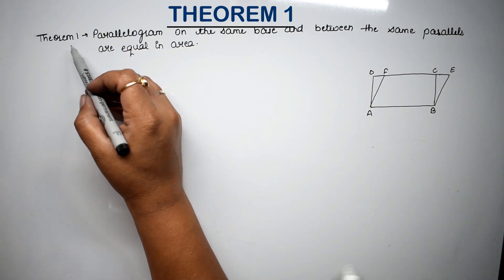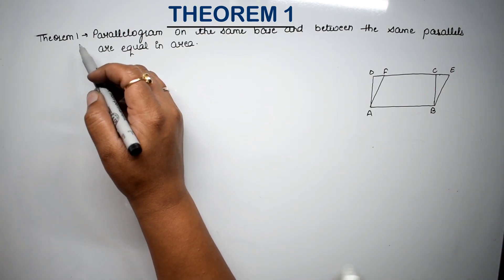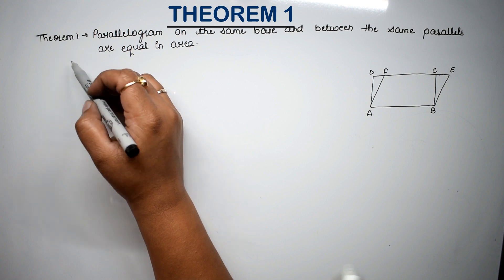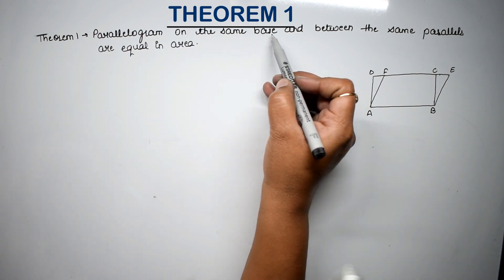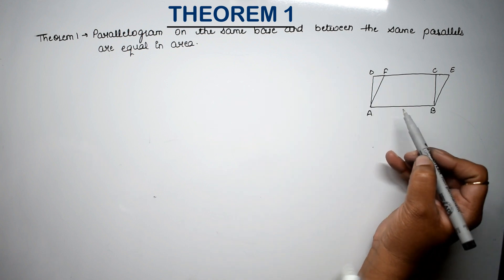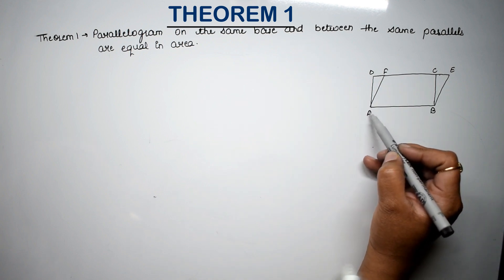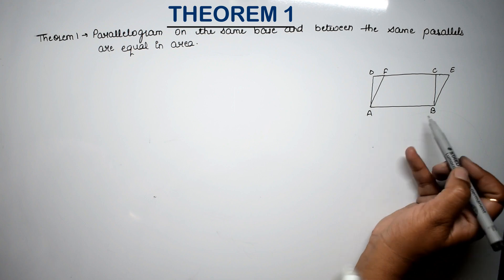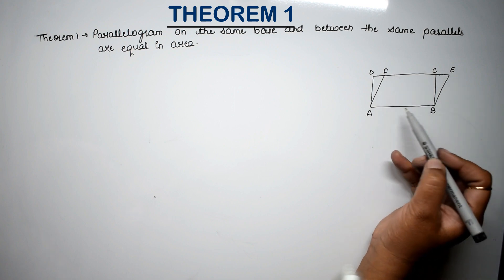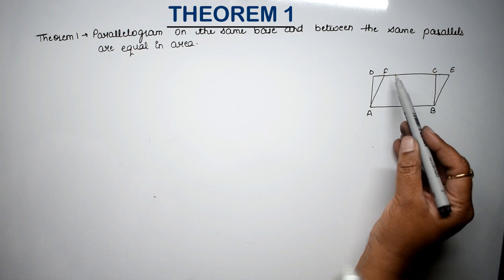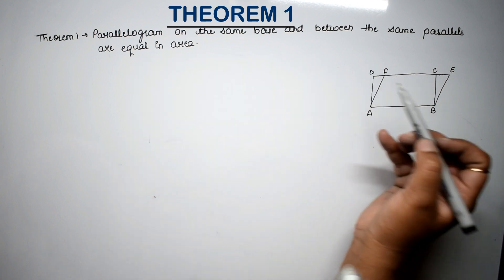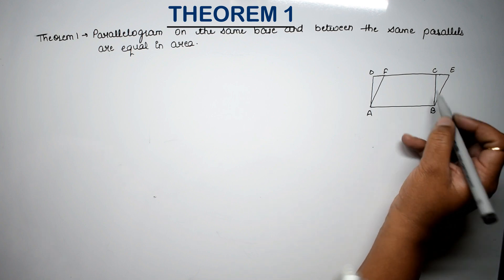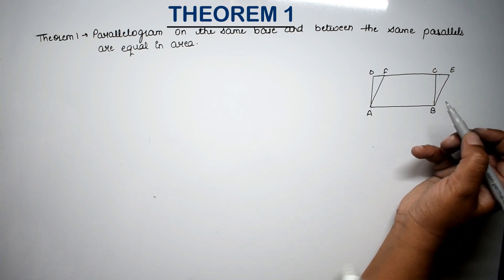Let's do theorem number 1 of the area of parallelogram and triangles. Theorem number 1 is called parallelogram on the same base, two parallelograms on the same base and between the same parallel lines are equal in area. So he says that these parallelograms are equal, so we have to prove this.